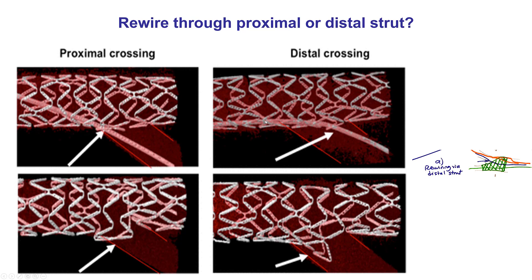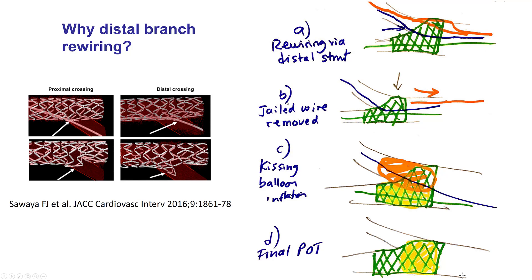Here is why: when rewiring is done through a distal strut and ballooning is performed, that portion of the stent scaffolds the side branch and provides a better result. In contrast, if we rewire through a proximal strut, once the balloon is inflated it actually makes the stent protrude into the main vessel. So provisional distal strut crossing is very important before doing balloon angioplasty.